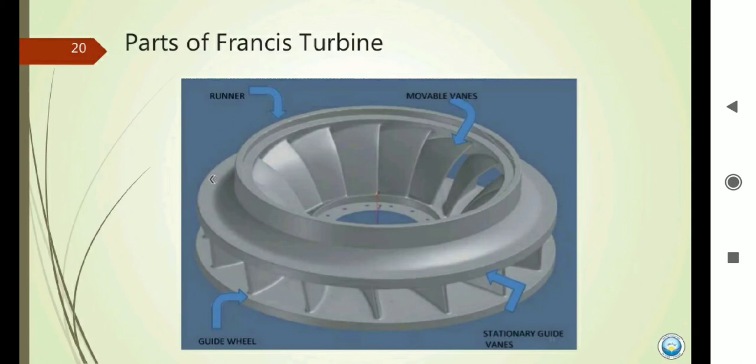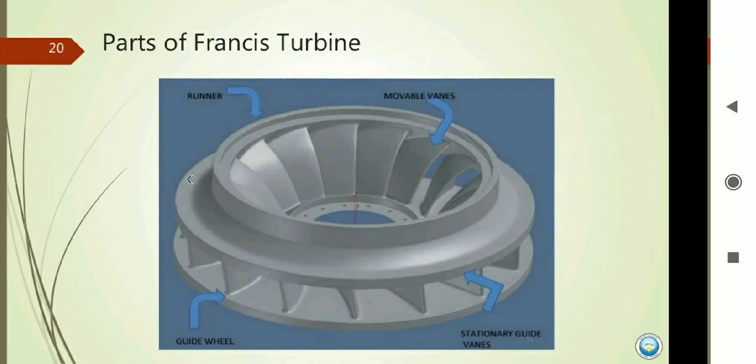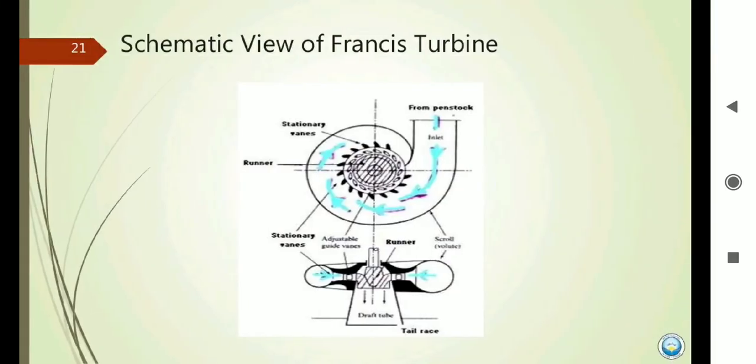Looking at the diagram of the Francis Turbine, it consists of a volute casing, penstock, guide wheels, runner, and guide vanes. In the schematic view, water enters in the radial direction and exits in the axial direction, making it a mixed flow turbine. You can see the tailrace, draft tube, runner, and guide vanes in the diagram.